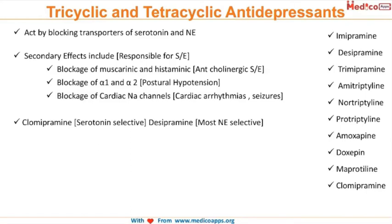Clomipramine is the most serotonin-selective TCA, and desipramine is the most norepinephrine-selective. So this class of drugs acts on both serotonin and norepinephrine, but clomipramine is most serotonin-selective and desipramine is most norepinephrine-selective.